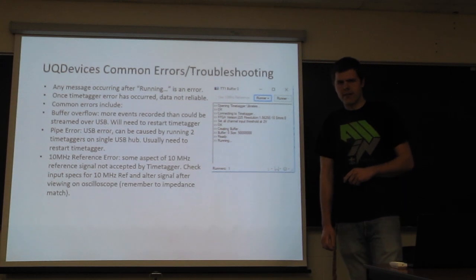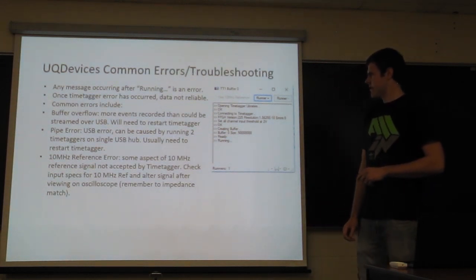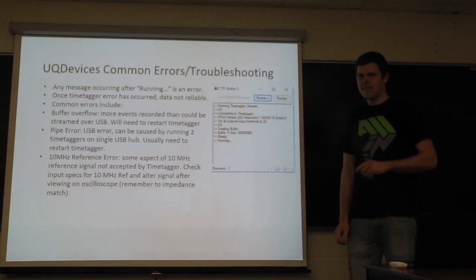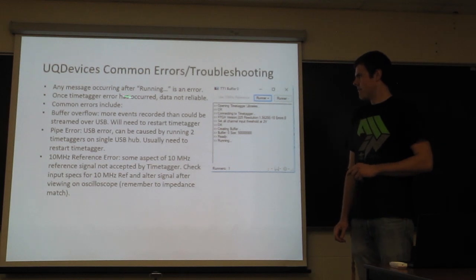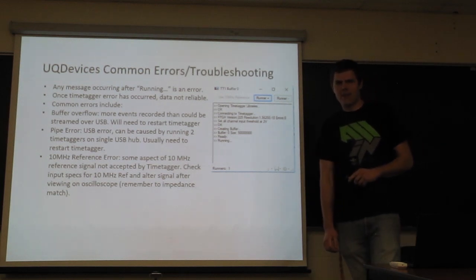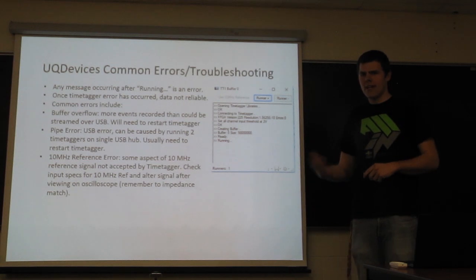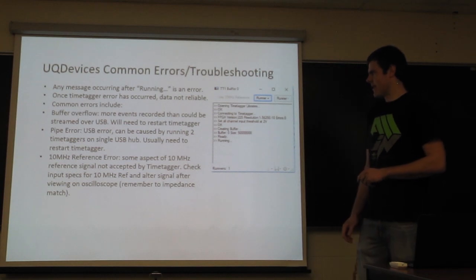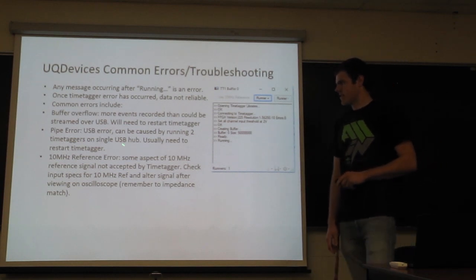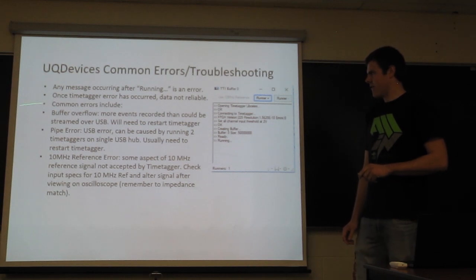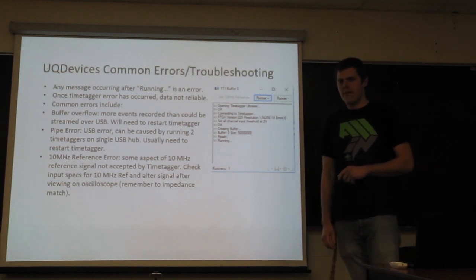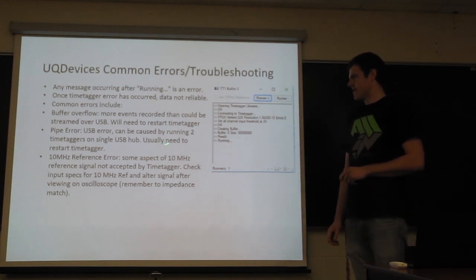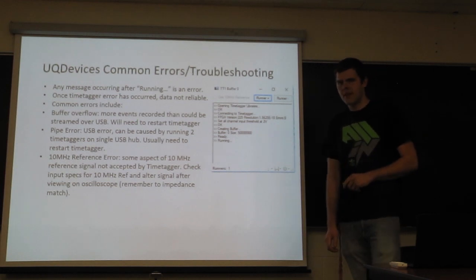So now let's talk about some common errors, some troubleshooting with this software. So again, I'll reiterate, if there's anything that happens after running, it's an error. And most of the time, if you see an error, the data afterwards is unreliable. The time tagger may keep going, but if you really want to trust the results, you need to stop and take care of it. So some common errors, a simple one, a buffer overflow, that's when you have too many events that go into the buffer before they can be streamed to the computer. This is simply fixed by restarting the time tagger and the software.